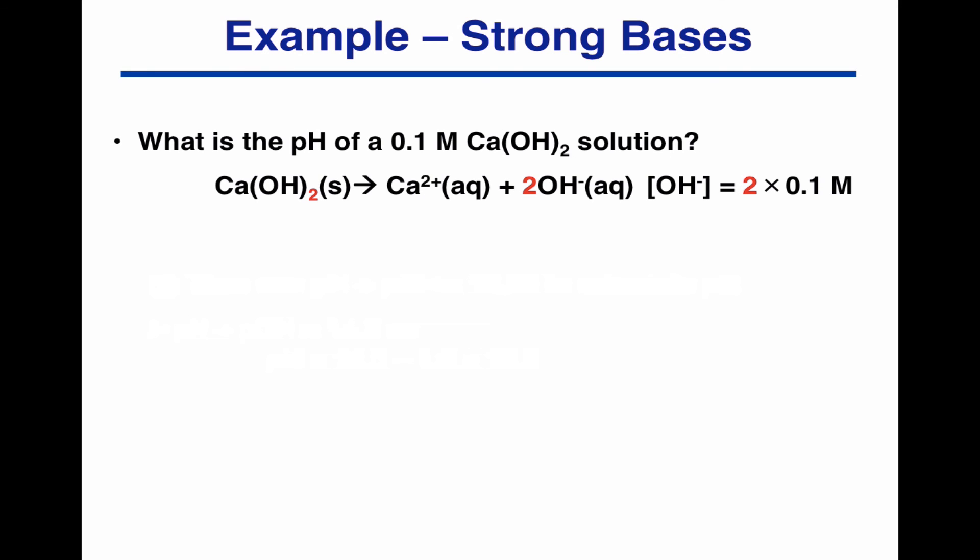Let's do a second example. What's the pH of a 0.1 molar calcium hydroxide solution? Looking at the formula, calcium hydroxide has two OH minuses for every one calcium. So a 0.1 molar calcium hydroxide solution has an OH minus hydroxide concentration of 0.2 molar.